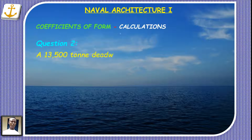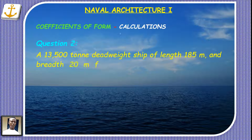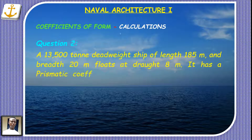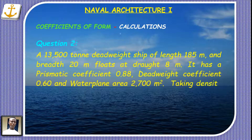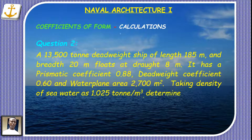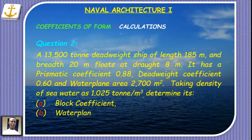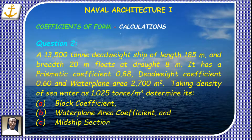A 13,500 ton deadweight ship of length 185 meters and breadth 20 meters floats at a draft of 8 meters. It has a prismatic coefficient of 0.88, a deadweight coefficient of 0.60, and a water plane area of 2,700 square meters. Taking the density of seawater as 1.025 tons per cubic meter, determine: (a) block coefficient, (b) water plane area coefficient, and (c) midship section coefficient.